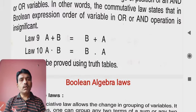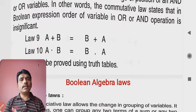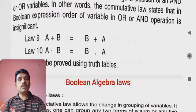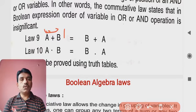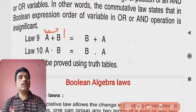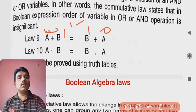We can prove this in a simple way. With two variables A and B, the probabilities of inputs are 4: that is 0-0, 0-1, 1-0, and 1-1. Suppose we take condition 0-1, meaning A is 0 and B is 1. Then A OR B is 0 plus 1, which equals 1. And B OR A is 1 plus 0, which also equals 1. So left hand side equals right hand side.